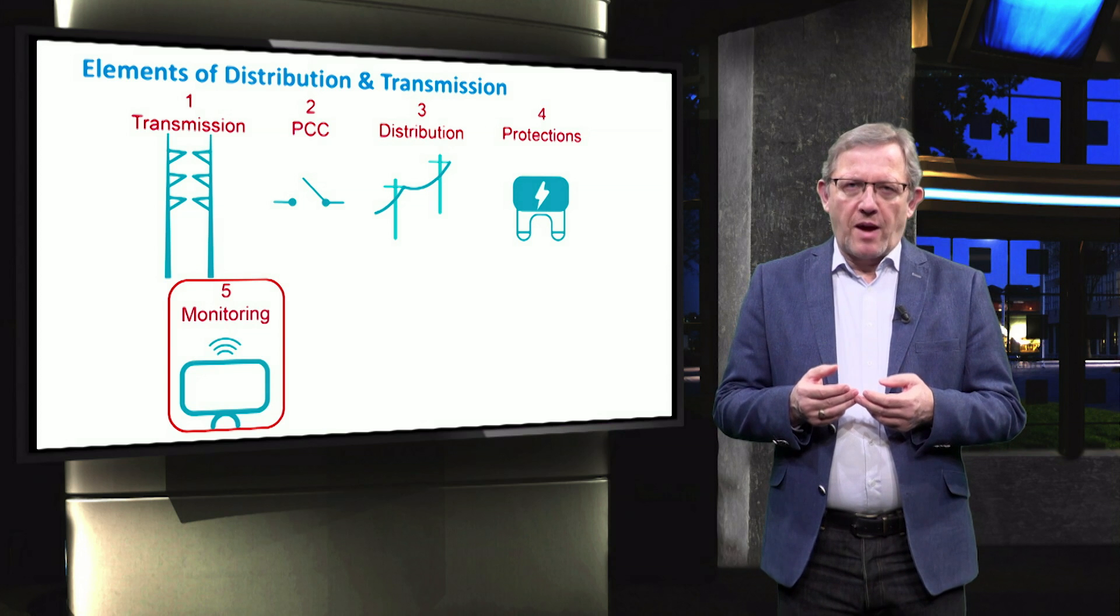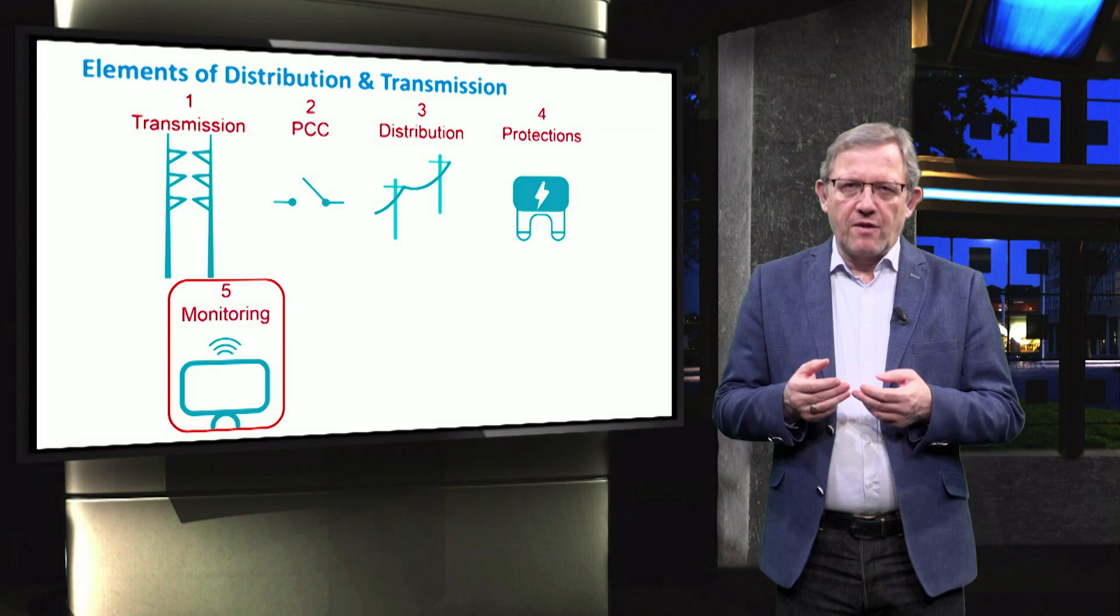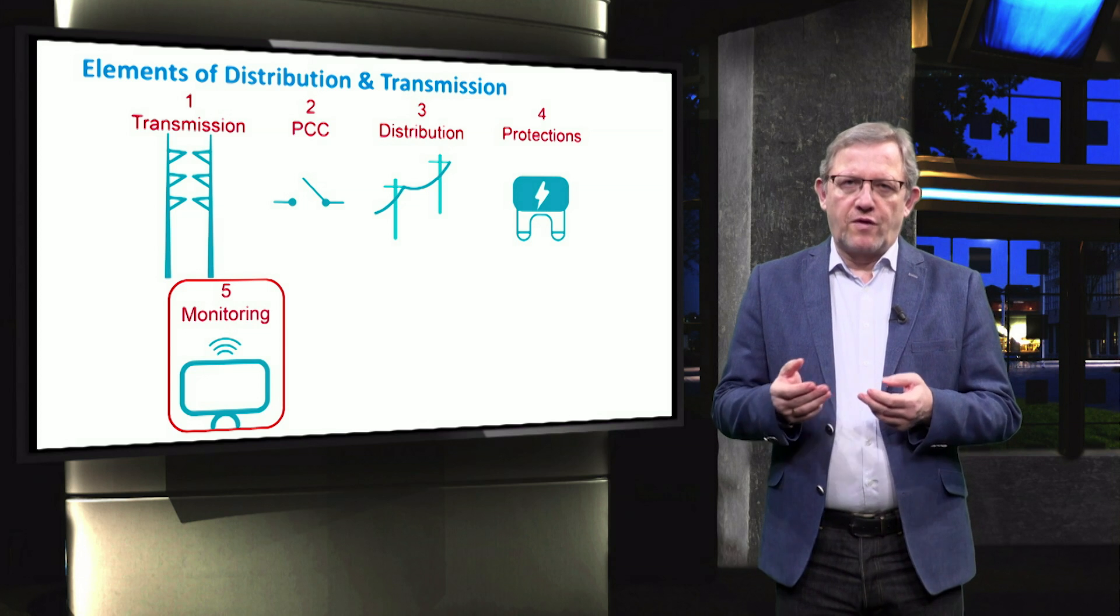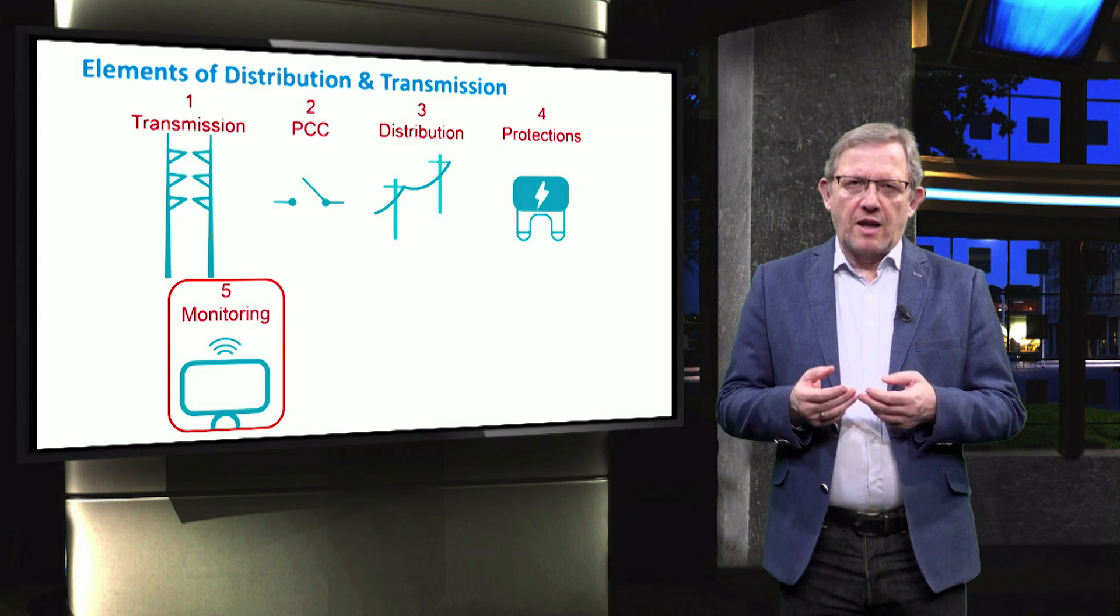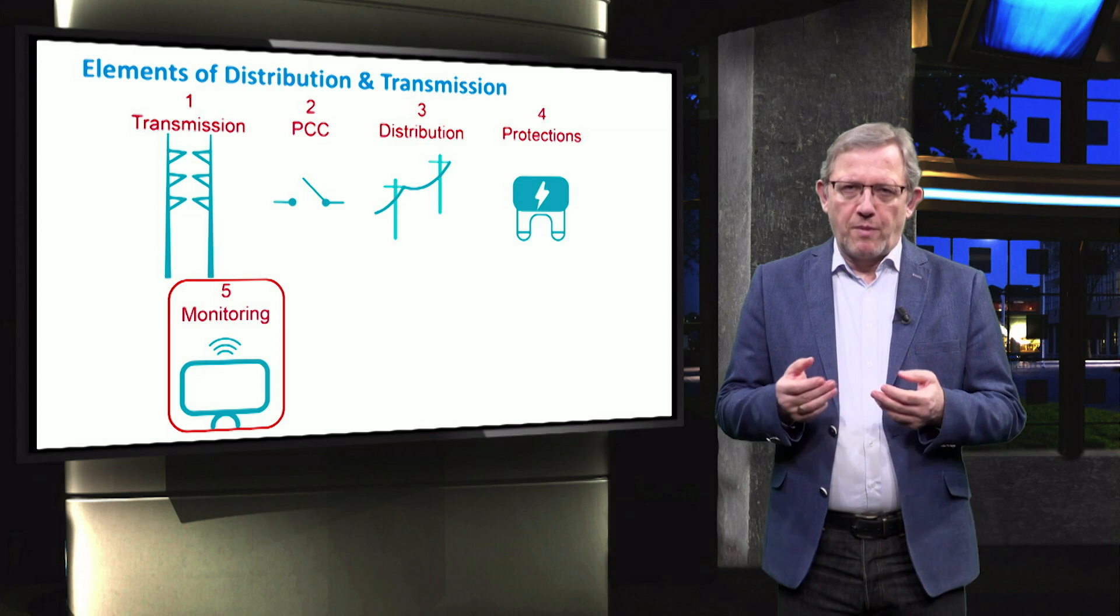Fifth, the monitoring system in a microgrid is required to collect relevant signals such as voltage, frequency, active and reactive power and electricity price signals, maybe temperature, etc.